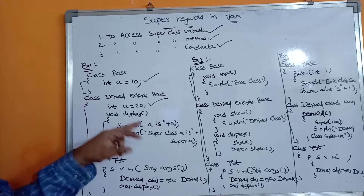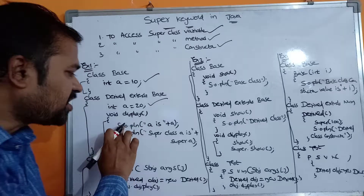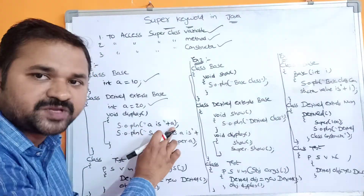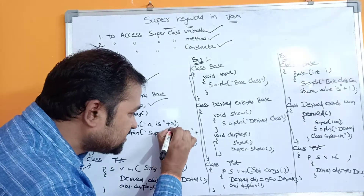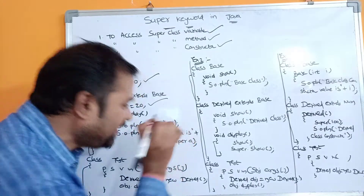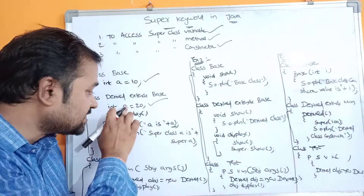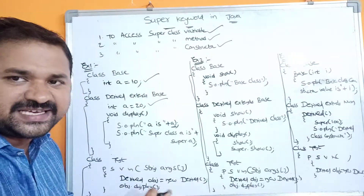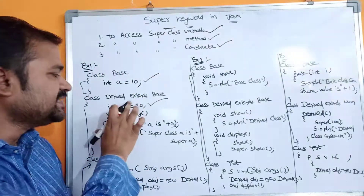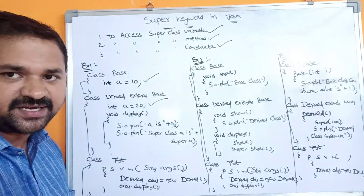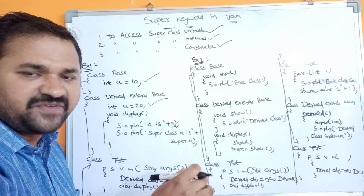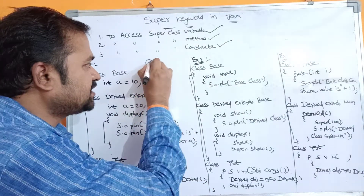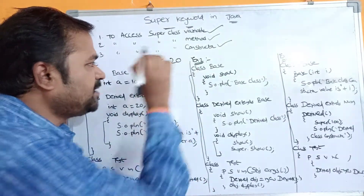Next we have a method called display. The statement is: System.out.println("a is " + a). If we simply use a, then the subclass value will be printed - the value declared in the corresponding class will be displayed. The value in the subclass is 20, so the output will be "a is 20".